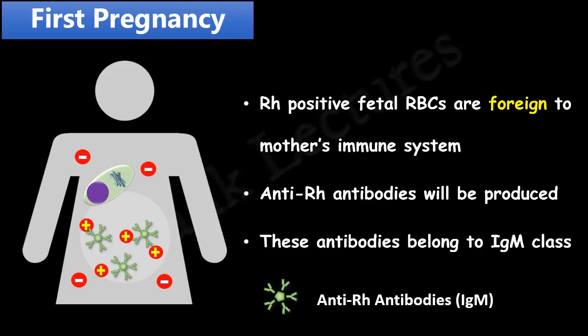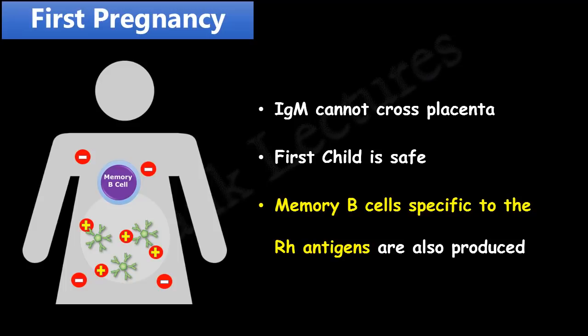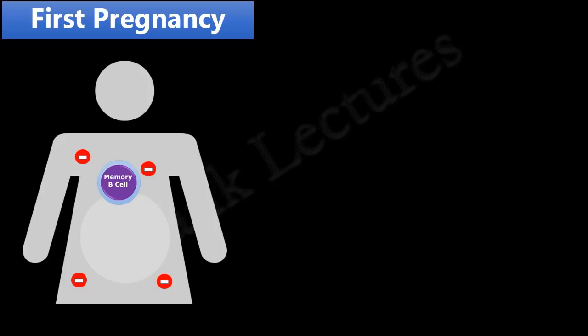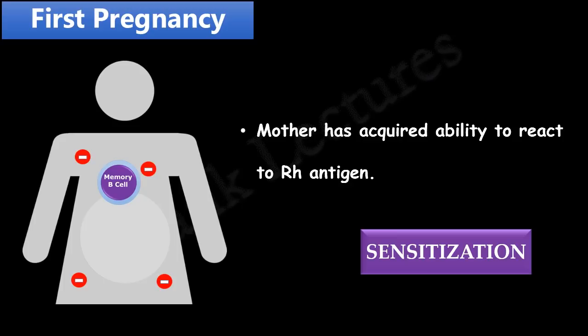The RH antibodies produced initially belong to the immunoglobulin M class. The fetal RBCs in the mother's circulation are cleared by these anti-RH antibodies. Since IgM class antibodies cannot cross the placenta, they are not a threat to the fetus. Since the child has already been delivered, this first RH-positive child is safe. Depending on the amount of fetal RBCs which enter the mother's circulation, memory B cells for these RH antigens will also be produced. The mother's immune system has now acquired the ability to react to RH antigen — this is known as sensitization.